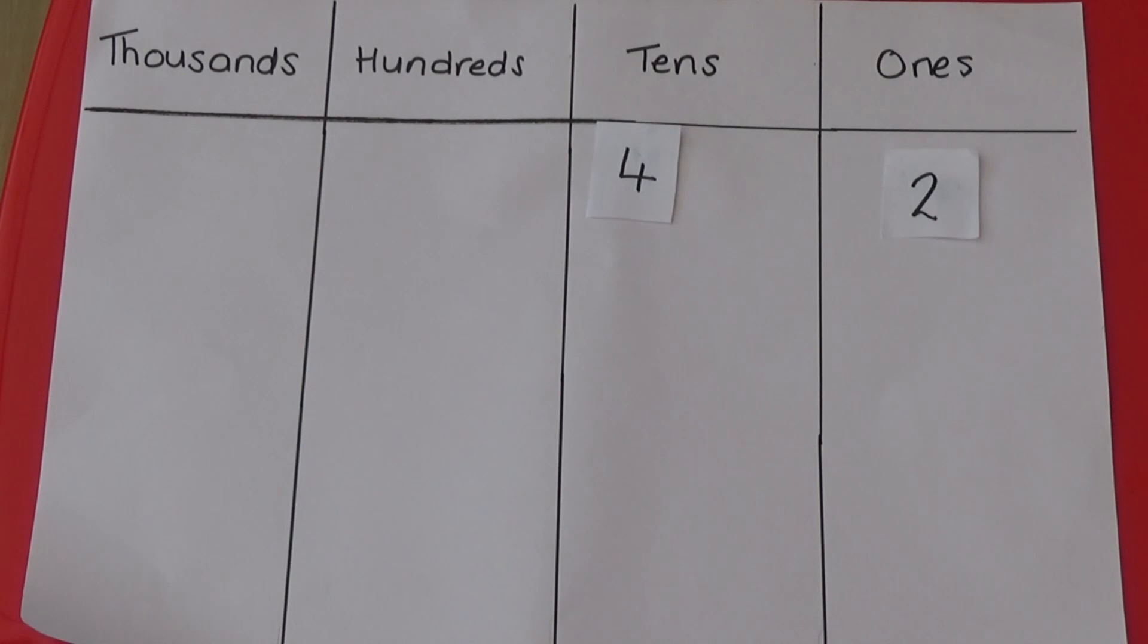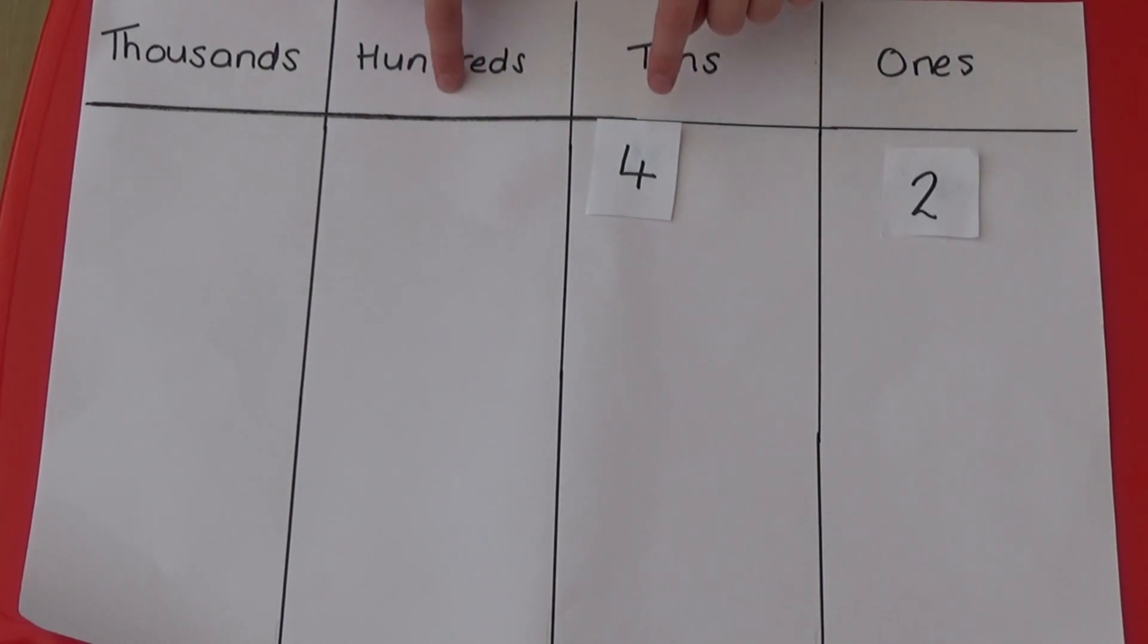Each column to the left on the baseboard is 10 times bigger than the column to its right. So if we look at my baseboard, 10 is 10 times bigger than 1 and 100 is 10 times bigger than 10 and 1000 is 10 times bigger than 100. As each column is 10 times bigger, to multiply by 10 we need to move each digit one column to the left so it becomes 10 times bigger.